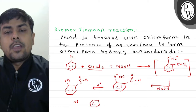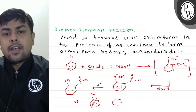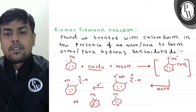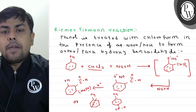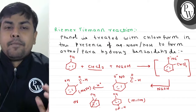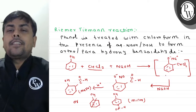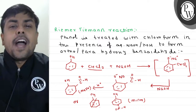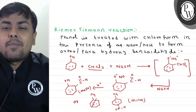This is ortho hydroxybenzaldehyde as the major product. Adding acidic conditions (H⁺ and water), we get OH with C=O. The para product is the minor product. I hope the Reimer-Tiemann reaction is now clear.